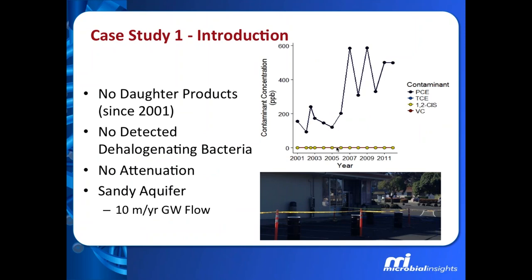Let's get to this first case study. The first case study I want to walk through is a former dry cleaner site. Regenesis chose this as a test site for several reasons. They had a long history of groundwater monitoring data going back to 2001. Conditions at the site were generally aerobic and Dehalococcoides wasn't seen — it was below detection. There was no evidence of daughter product formation prior to this study. So it presented a challenge with redox conditions, but with no evidence of prior degradation it also gives us great potential to see impacts when we add Plume Stop and bioaugmentation. Finally, it's a sandy aquifer with a groundwater velocity of about 10 meters per year — representative of a site where there's a need to stop contaminant migration.